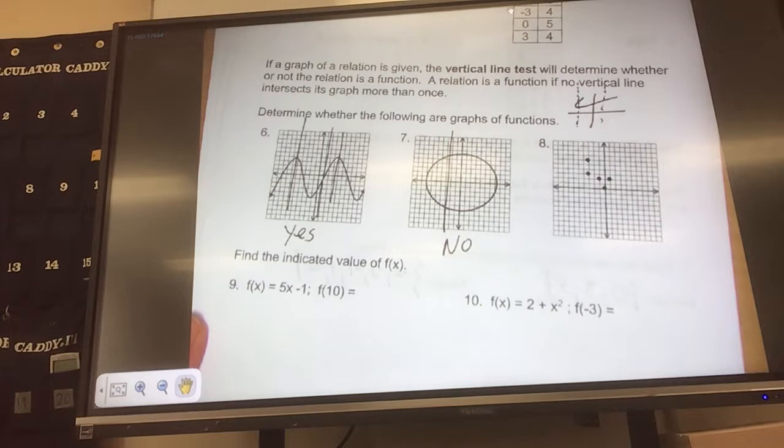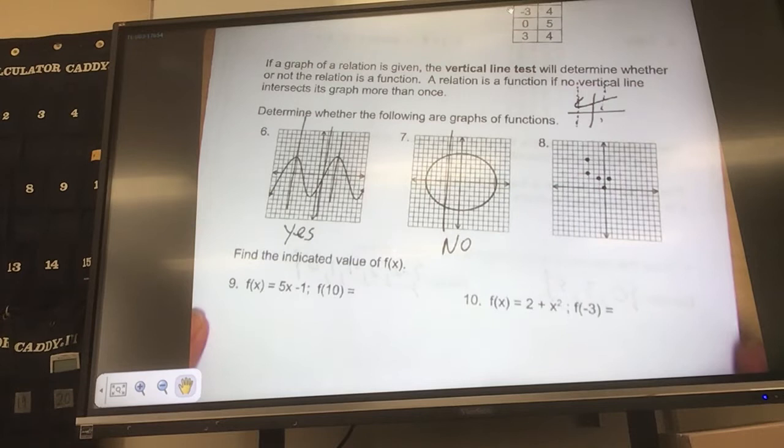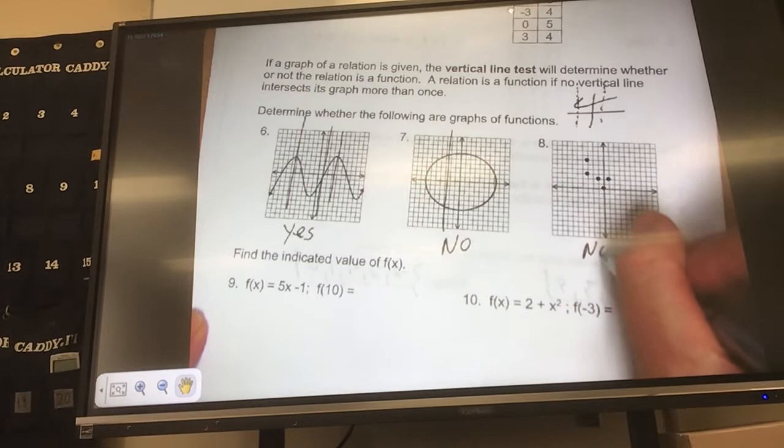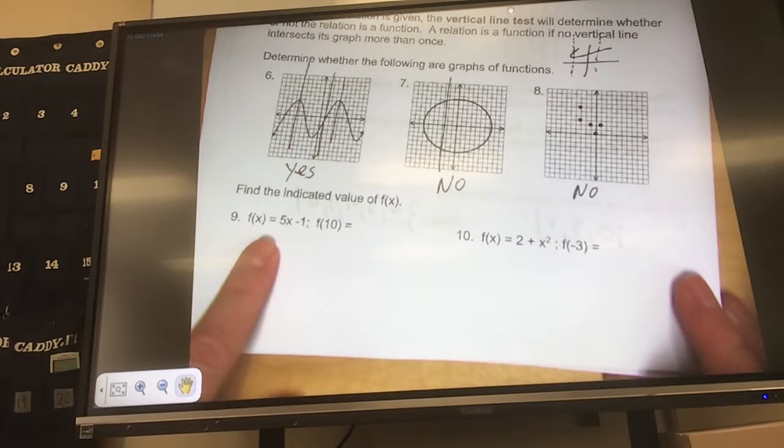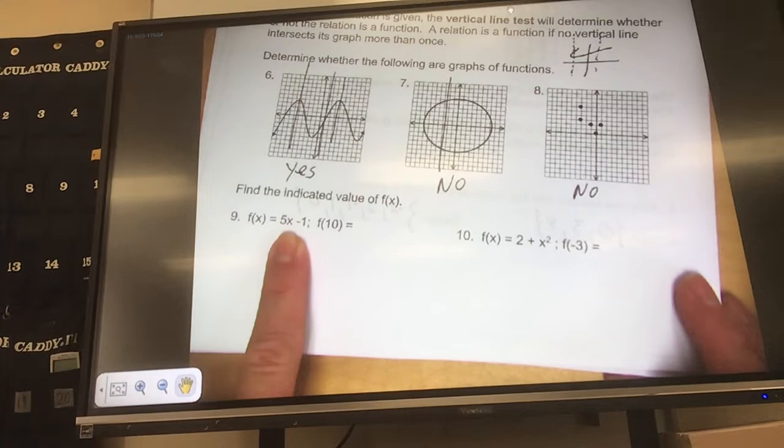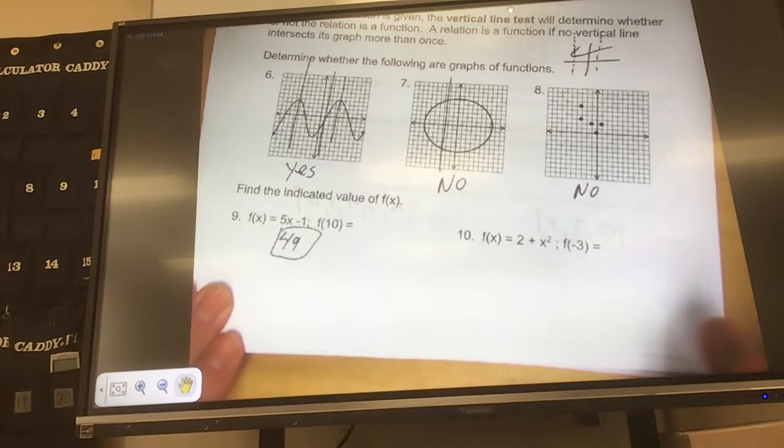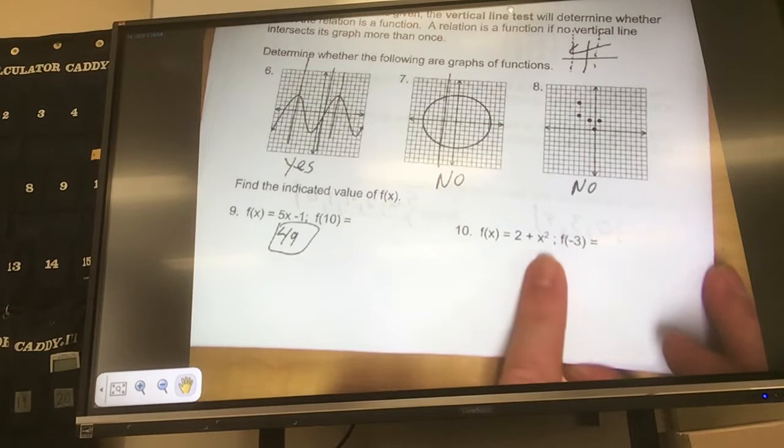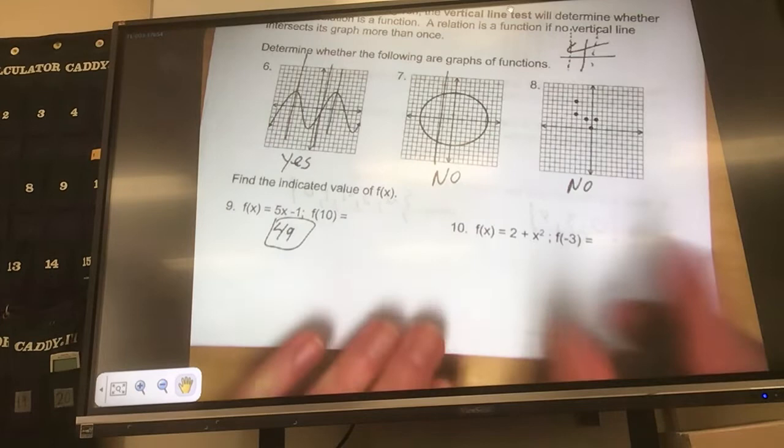How about number 8? Is that a function? No, because if I did a vertical line test right here, it crosses twice. So, this would be a no. Number 9, too easy. It says f of x equals that. What's f of 10? Well, it took out the x and put in a 10, so that's what I'm going to do. I'm going to take out the x and put in a 10. So, 5 times 10 is 50 minus 1, 49. Number 10, it took out the x and put in a negative 3. Negative 3 squared, that's negative 3 times negative 3 is 9 plus 2 is 11.